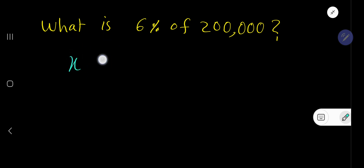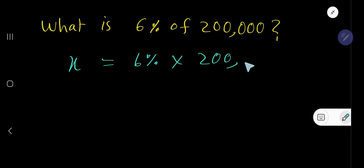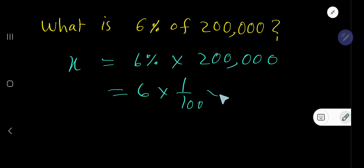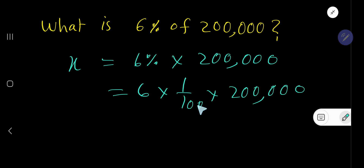X equals 6% of 200,000, which means multiplication sign, so we have 6 over 100 times 200,000. Now cancel this zero, this zero, this zero, this zero, this zero.